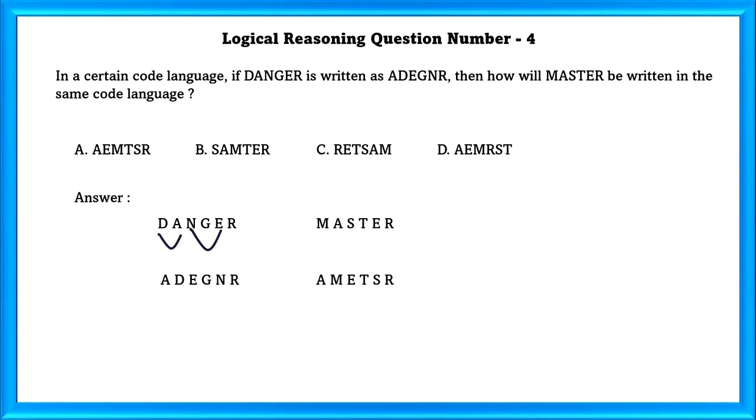A and D are interchanged, N and E are interchanged, and G and R remain same. So same way, the answer would be A M E T S R. That is A.